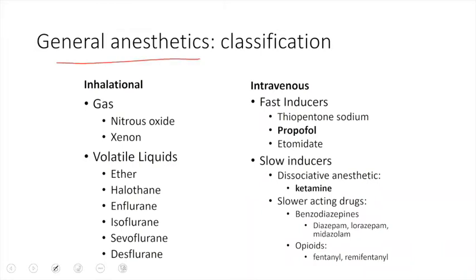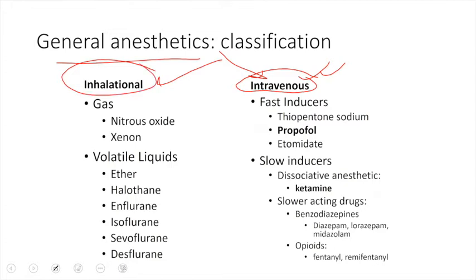When giving general anesthetic, we should first induce and then maintain the anesthesia. For induction, we give induction agents via the intravenous route. For maintenance, it is given via the inhalational route. Among the intravenous route there are fast inducer drugs like thiopental sodium, propofol, etomidate, and slow inducer agents like dissociative anesthesia — for example ketamine — and opioids.